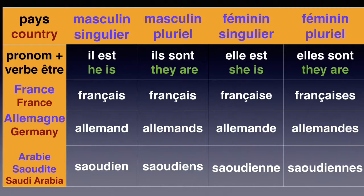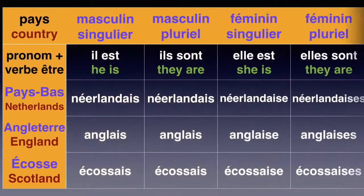Il est français, elle est française — we add an E at the end because it's feminine. Il est allemand, elle est allemande. Il est néerlandais — so he is Dutch — elle est néerlandaise, we add an E. Il est anglais, he's English. Elle est anglaise, we add an E at the end. Il est écossais, he's Scottish. Elle est écossaise, we add an E at the end to show it is feminine.